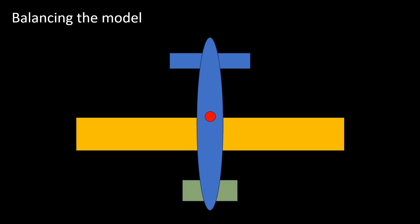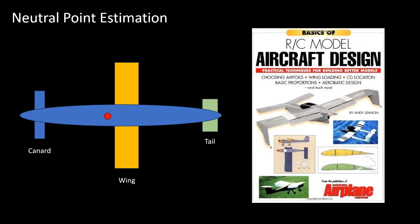Introducing a horizontal tail moves the neutral point rearward. It is difficult to estimate the neutral point location, but a simplified method is proposed by Andy Lennon in the book Basics of RC Model Aircraft Design. The method is as follows.